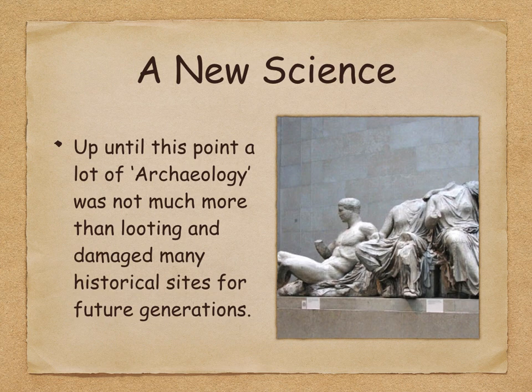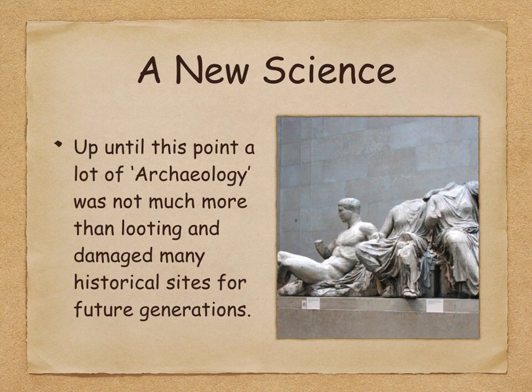Even as archaeology developed from the 1730s onwards, there was still a lot of looting and damage. As you can see in this picture, these statues are from the famous Parthenon on the Acropolis in Athens — a phenomenal building in Greece. Some statues had fallen off due to an explosion in the 17th century. An Englishman, Lord Elgin, officially got permission from the Ottomans to take these statues, bringing them back to England where they now sit in a museum. There is great controversy over whether this was done properly, as the artifacts were removed without full due process.